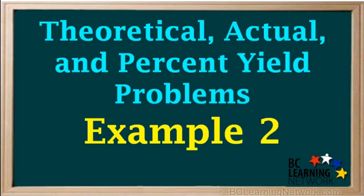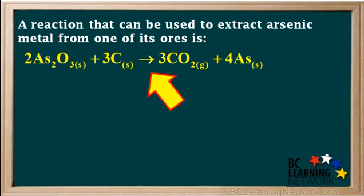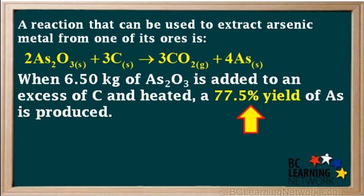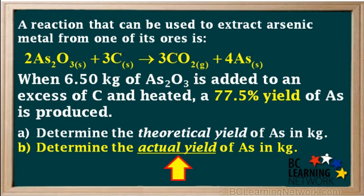In this example, we are given the percent yield and asked to find the theoretical and actual yields. A reaction that can be used to extract arsenic metal from one of its ores is 2As2O3 plus 3C gives 3CO2 plus 4As. When 6.5 kg of As2O3 is added to an excess of carbon and heated, a 77.5% yield of arsenic is produced. We are asked to determine the theoretical yield of arsenic in kilograms and the actual yield of arsenic in kilograms.